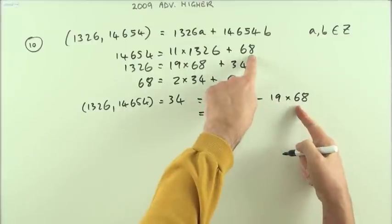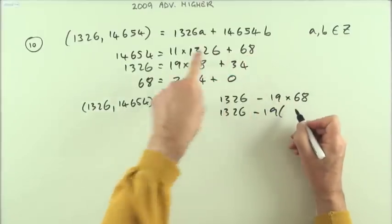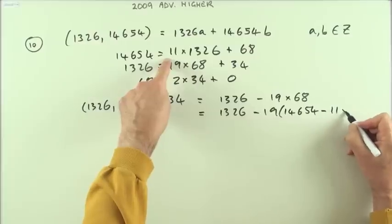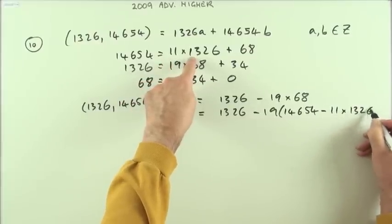And that 68 can be replaced by 14654 take away 11 lots of 1326.